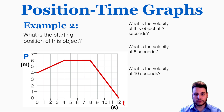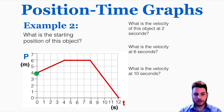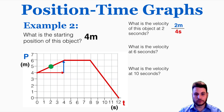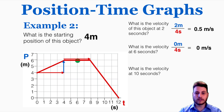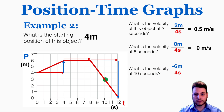We can also determine the starting position and the velocity at 2 seconds, 6 seconds, and 10 seconds. The starting position is 4. At 2 seconds, the line has a rise of 2 meters over a run of 4 seconds, giving a velocity of 0.5 meters per second. At 6 seconds, the line is perfectly flat, so the velocity is 0 meters per second. At 10 seconds, the line has a rise of negative 6 over a run of 4, giving a velocity of negative 1.5 meters per second.